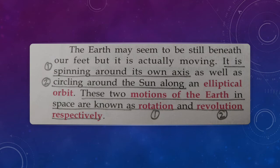Now, just like a train, the Earth may seem to be still beneath our feet, but it is actually moving, and it is moving in two different ways. First, it is spinning around its own axis, and it is spinning like a top. The Earth keeps spinning around its axis. And while it is spinning, the second movement that the Earth undergoes is it is circling around the sun — on a fixed orbit or a fixed path which is elliptical in shape. Elliptical means like an egg; it is not round, it is like an egg.